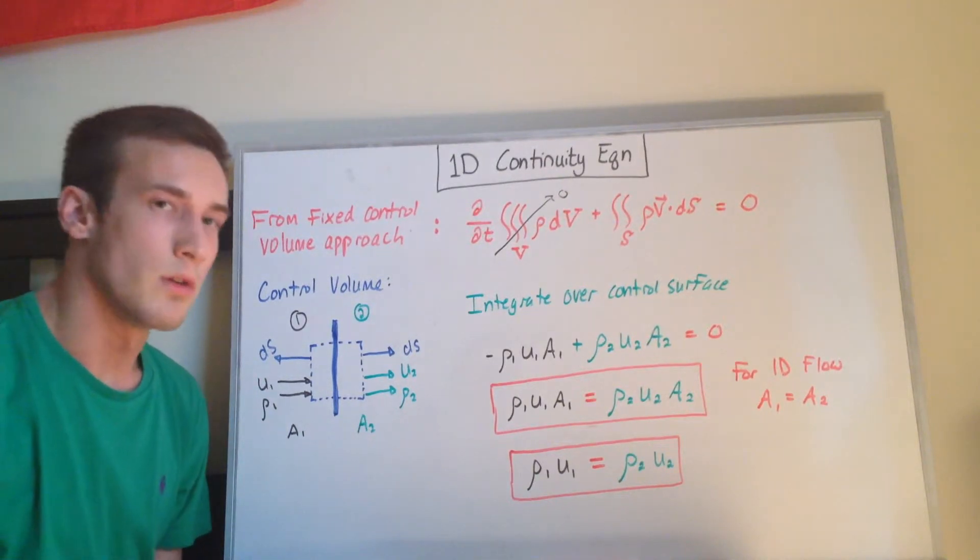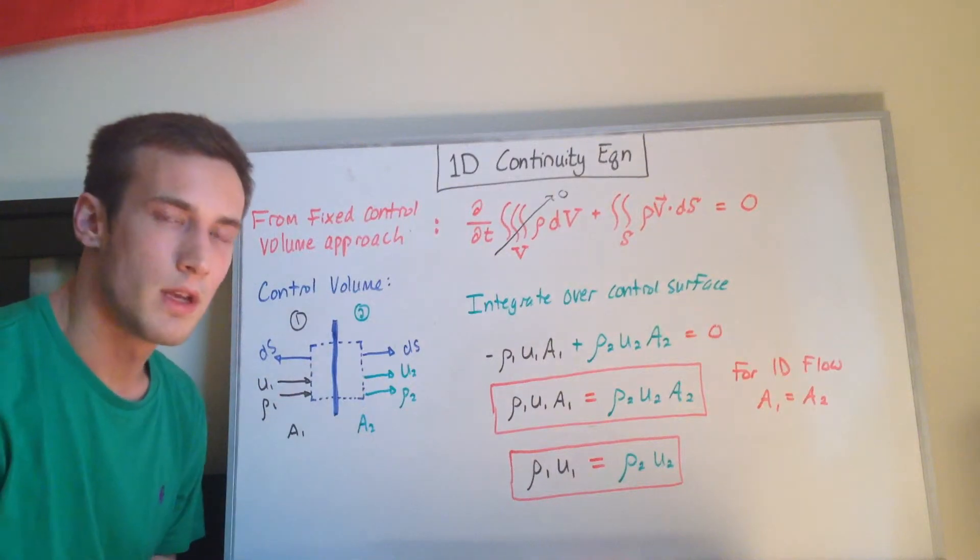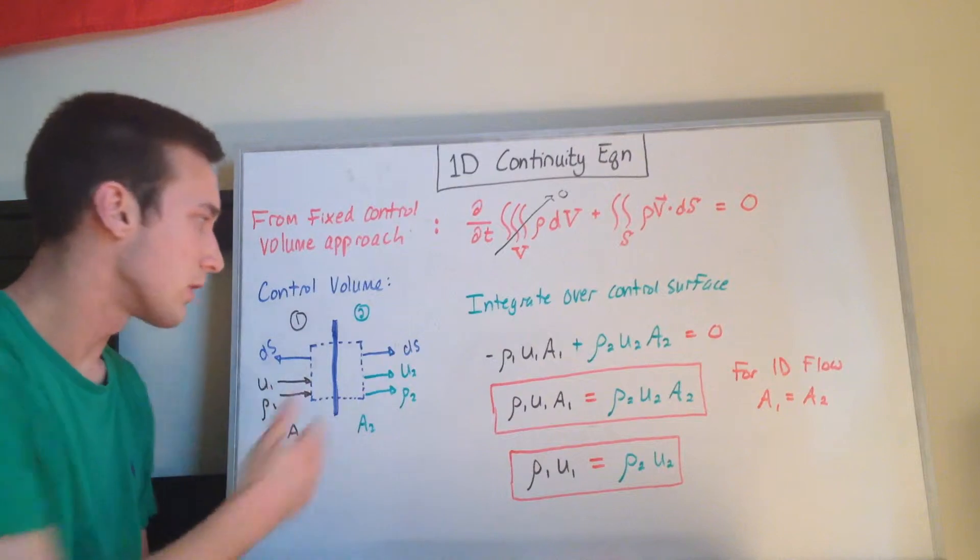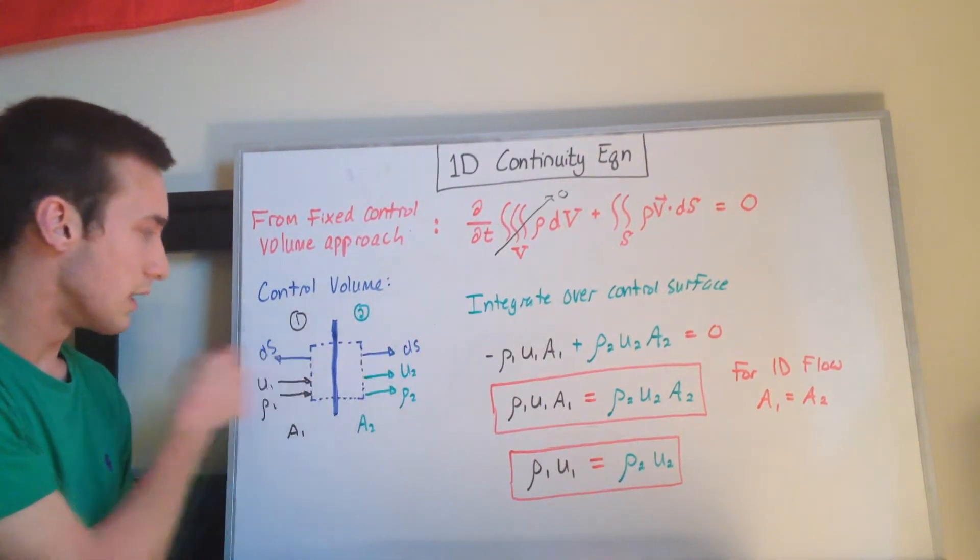And I mentioned in the other video that the ds surface area of the control volume is always pointing out, it's defined out of the control surface. So that's why this is pointed out this way, and this one is pointed to the left this way.